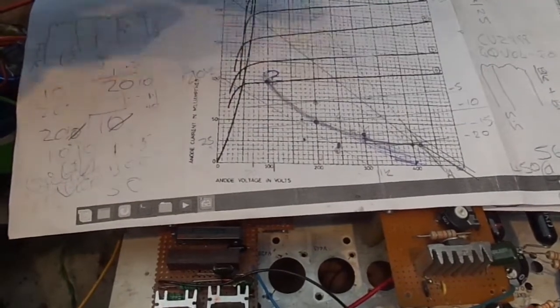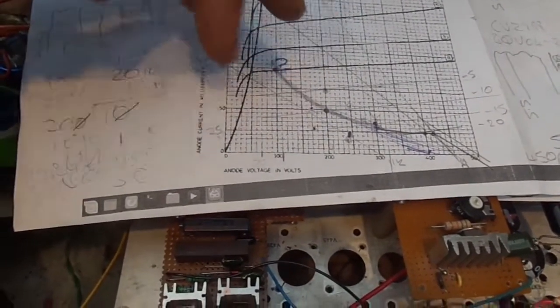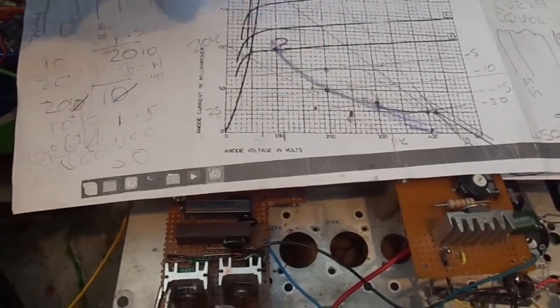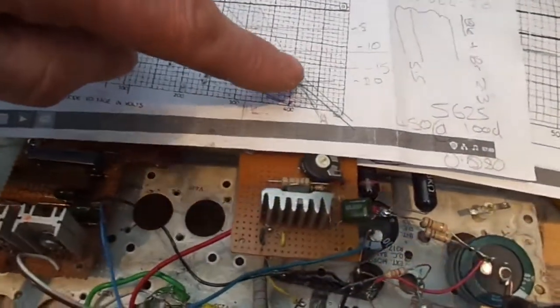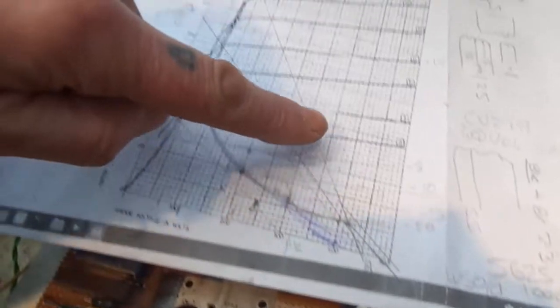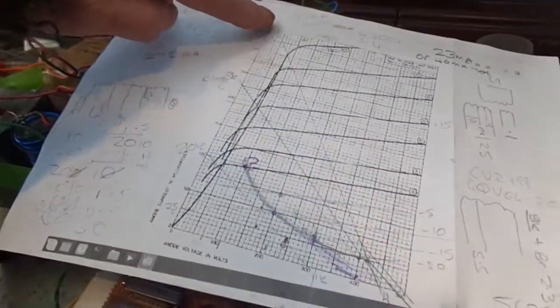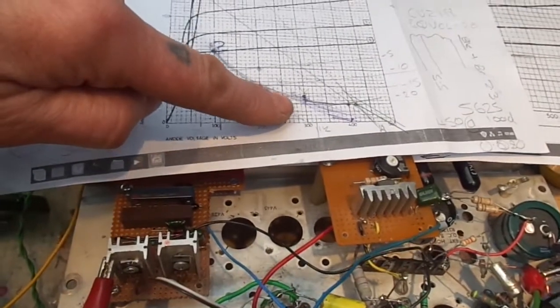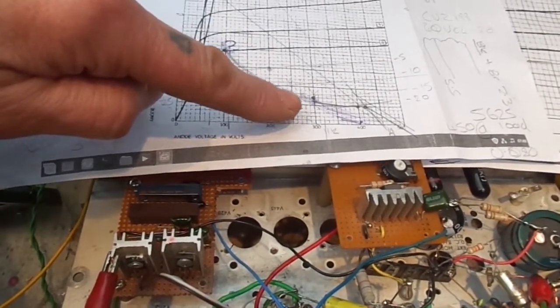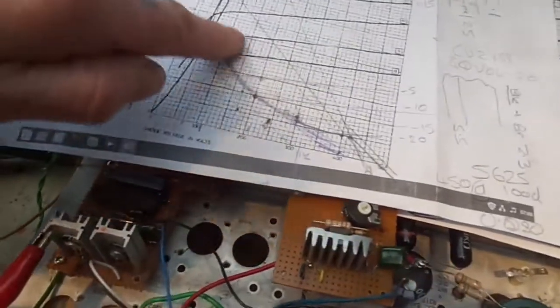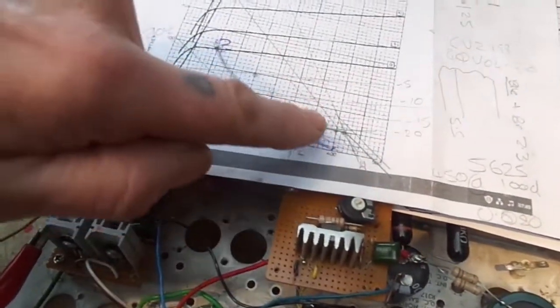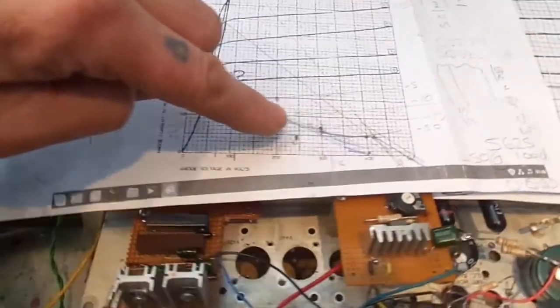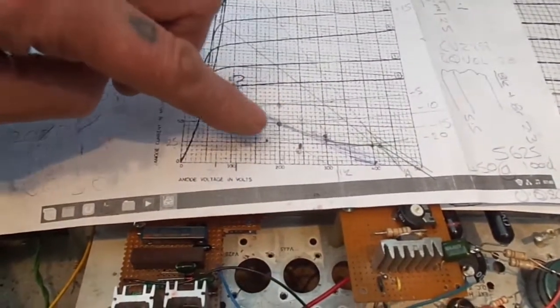But basically what we do, as I mentioned before, for class B we do a quarter of the primary because that's what the valve sees in class B. Well in this case, follow that line going all the way up there, that's what the bulb would see. That is going way over our maximum power dissipation. And this is our class A load line and that's going way over. So as far as I know you can go over a bit, but not that bloody much.